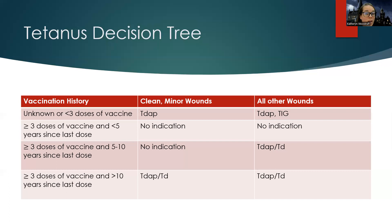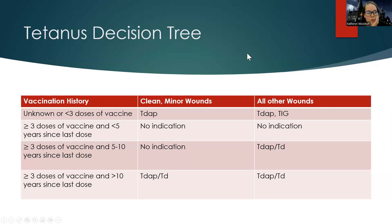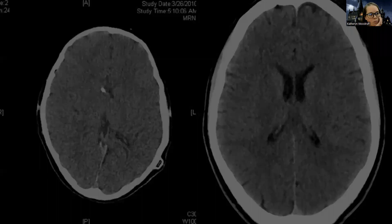A priority question to ask would be about their tetanus vaccination status. We might give you a question like: it's been eight years since someone received their booster — what do you expect? Or it's been three years — what do you expect? It's going to be something clear-cut, so don't get too caught up in the back and forth here.